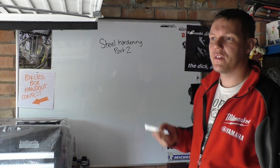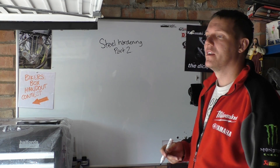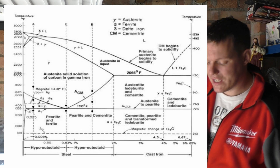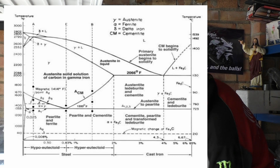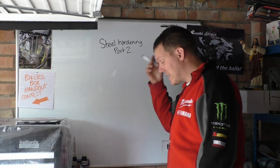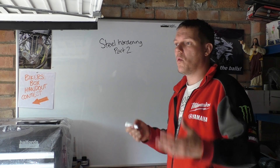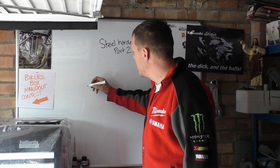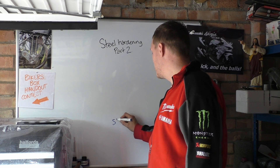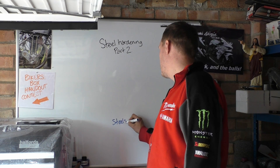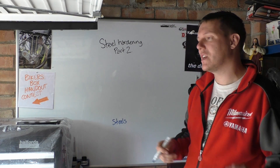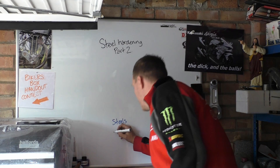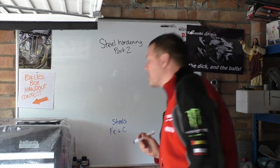I mentioned briefly the iron-carbon phase diagram. You only really need to start looking at that when you're looking at actual temperatures and when these temperatures come into effect. So what we want to talk about first — we have steels, and we have carbon content, because carbon is what is added to iron to make steel. All steels are Fe plus carbon.